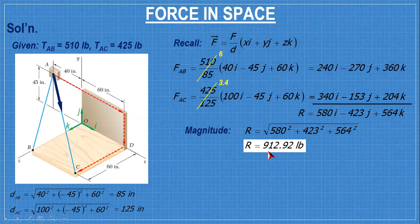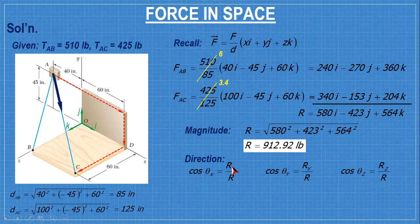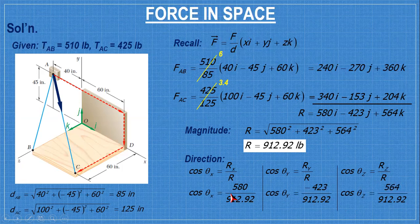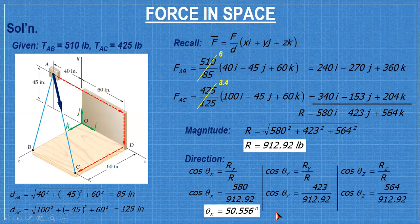So the magnitude of the resultant is 912.92. And direction or direction angles, this one, cosine theta x, theta y and theta z, and then you substitute the components. Arc cosine, you can solve for theta x, same with this one theta y and also with theta z.